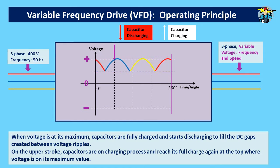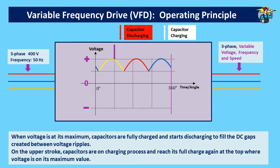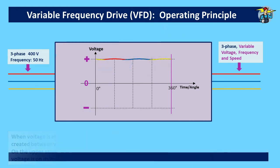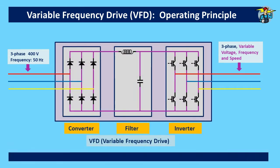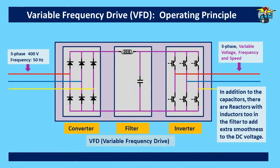On the upper stroke, capacitors are in the charging process and reach full charge again at the top, where voltage is at its maximum value. The main purpose of the VFD filter capacitor is to provide this smooth and linear DC voltage, which is essential for the next stage operation at the inverter. In addition to the capacitors, there are reactors with inductors too in the filter to add extra smoothness to the DC voltage.